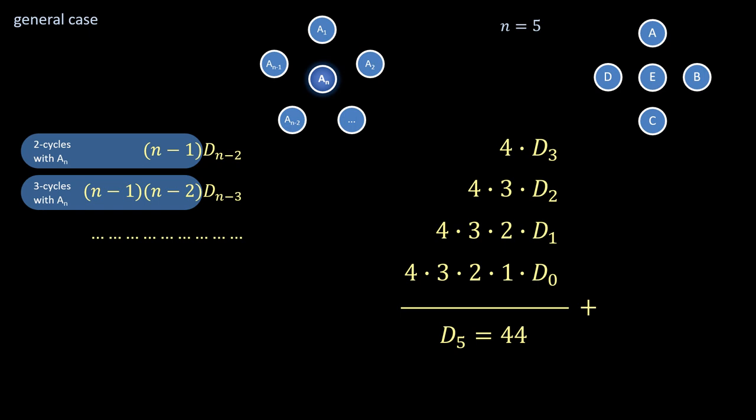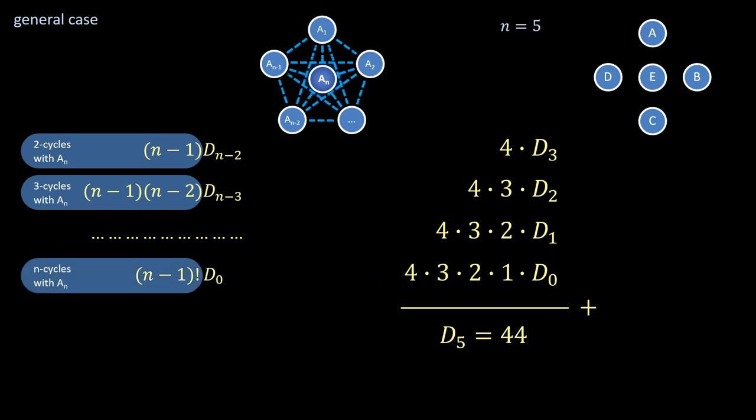Up till the last term, representing all set-spanning cycles. A general expression can be given for the number of i cycles containing a_n. a_n itself is fixed, so the remaining choices can be expressed as (n-1) permute (i-1).